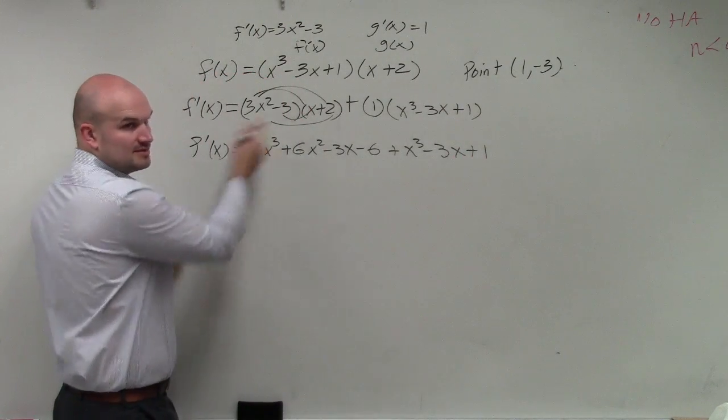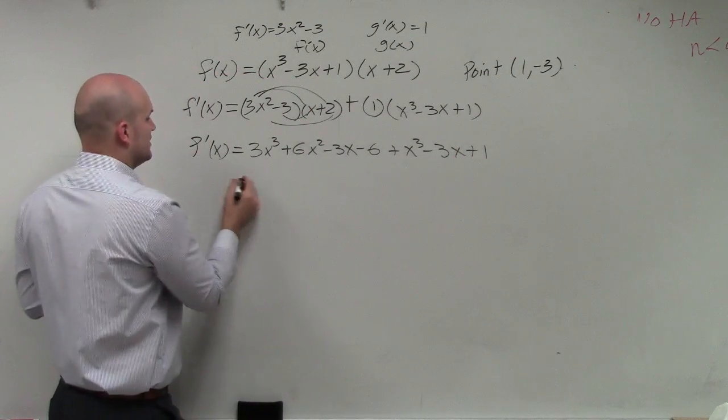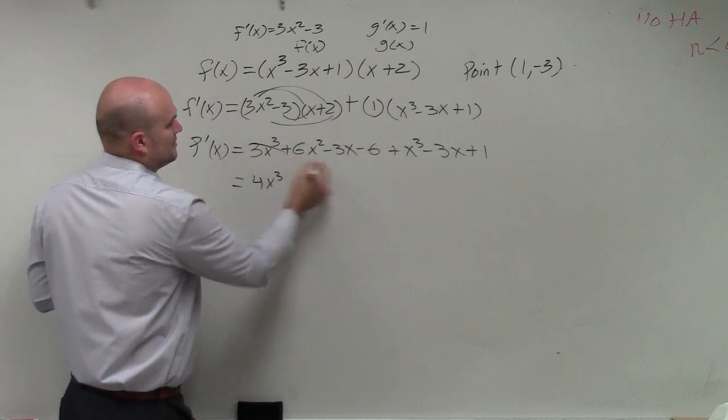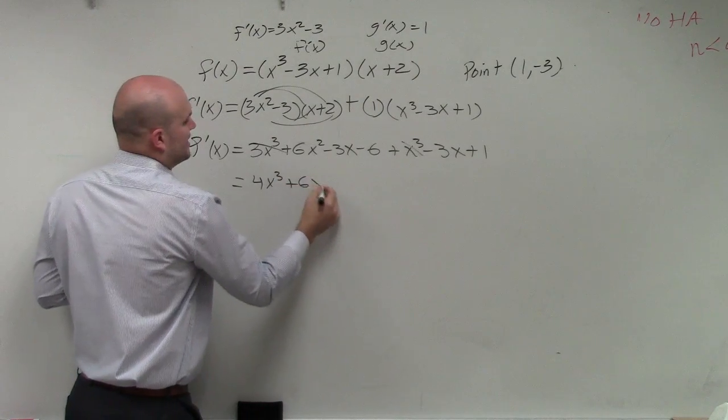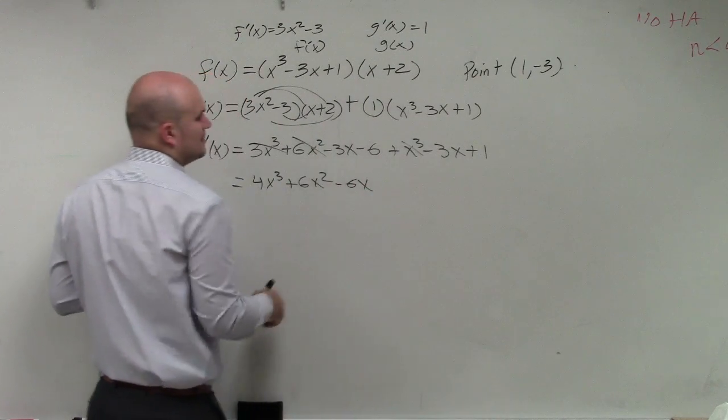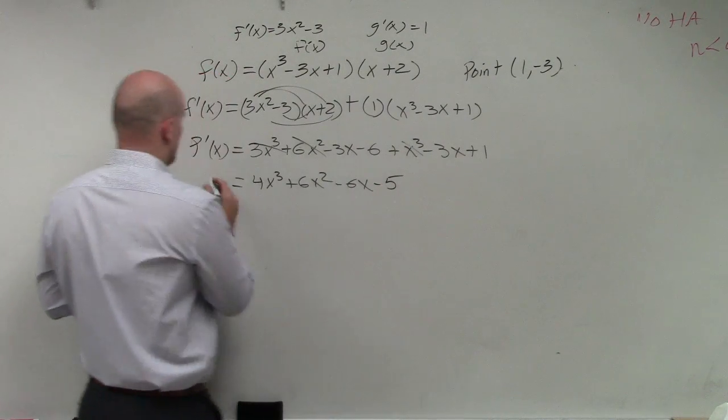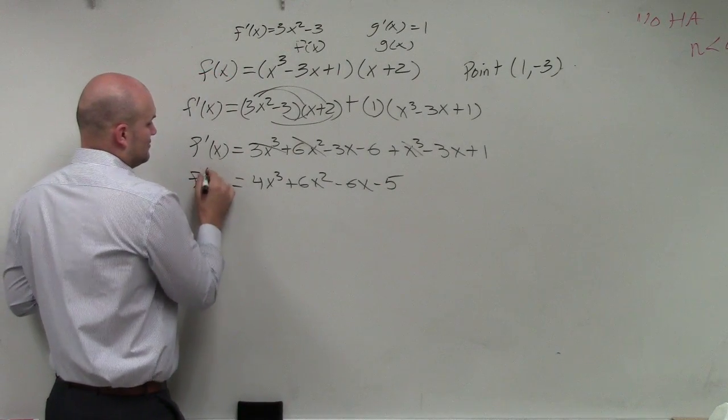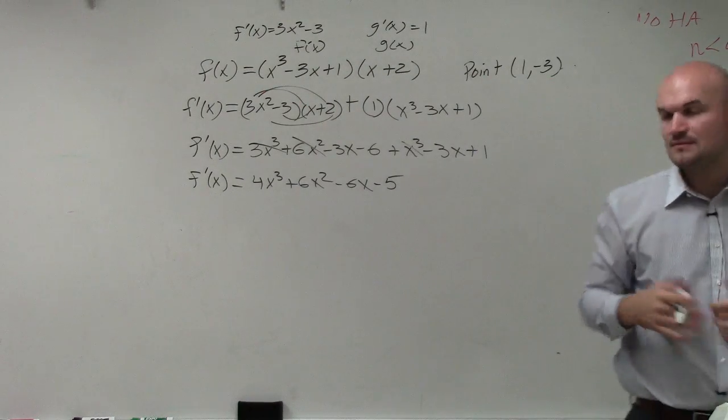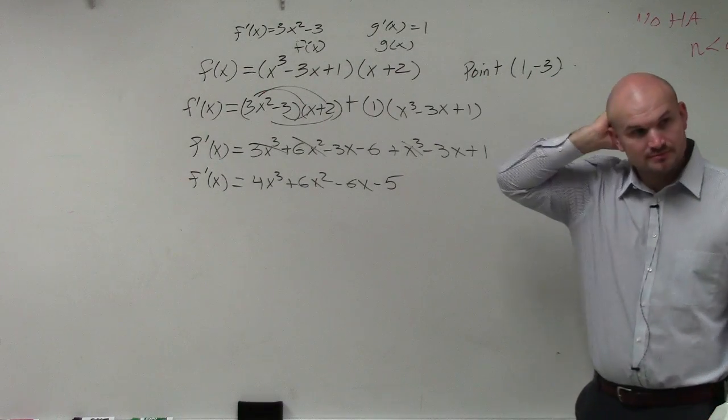Does everybody follow how I just multiplied that out? Now we can just go ahead and combine like terms. So now we have 4x cubed plus 6x squared, and then we have minus 6x and then minus 5. So that is our slope of our function.